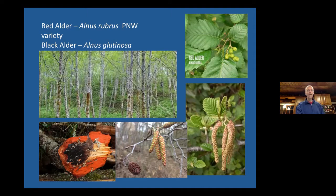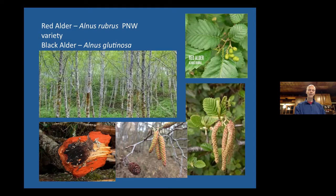An alder tree is what we call monoecious, meaning one house, meaning that all of its reproductive capacity is on one plant. There are plants that are dioecious — meaning there's a male plant and a female plant, 'di' meaning two, two houses. The ginkgo biloba is an example of that. But most trees are monoecious. This shows the catkins and last year's female cone; little bracts will come out of it as the alder seeds when that time comes.